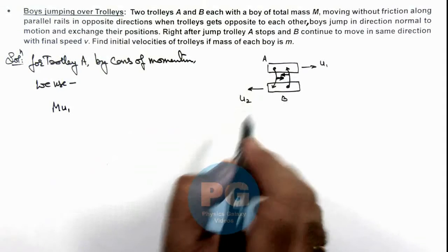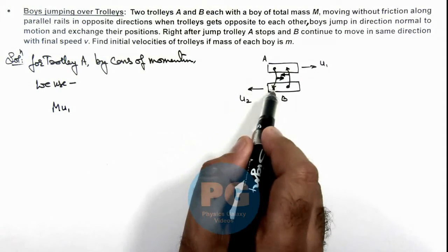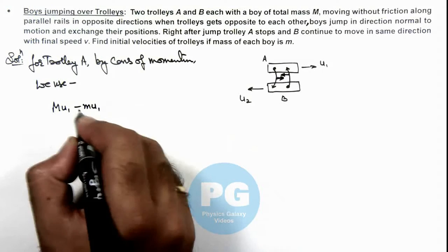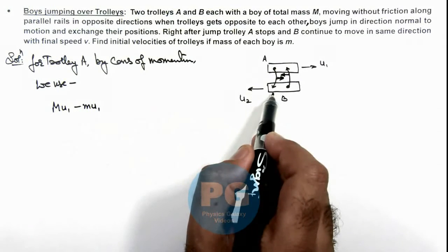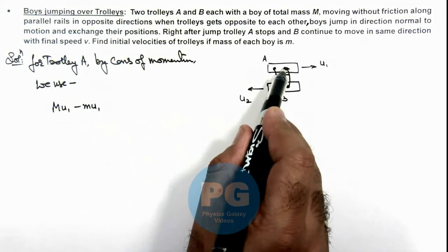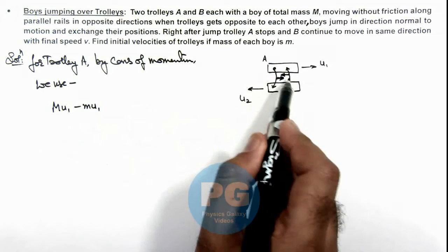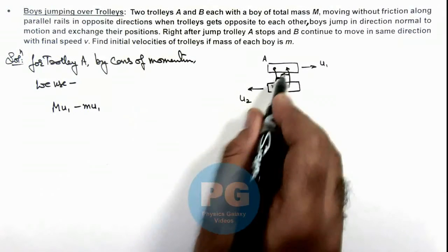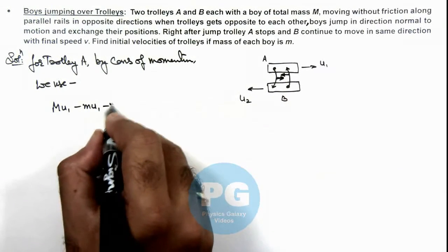When its boy jumps off, it carries the momentum minus m·u1 from it because it is jumping off. And the boy of trolley B jumps over to trolley A carrying a momentum in opposite direction, traveling with a speed u2, we can write it minus m·u2.